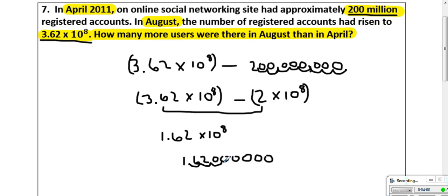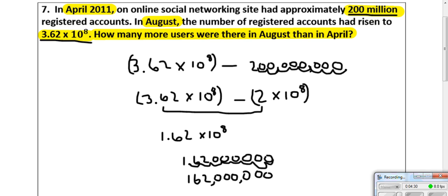1, 2, 3, 4, 5, 6, 7, 8. So we have to the 8th power, I added enough zeros there. 1, 6, 2, 0, 0, 0, 0, 0, and 0. So 162 million more users in August than in April.